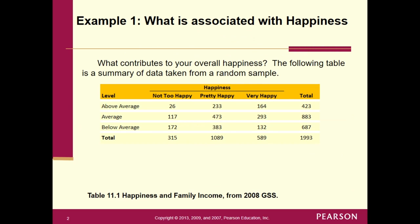So, what is associated with happiness? There is an actual sample that was taken, and what was looked at was family income — that is the explanatory variable. They had different levels: above average, average, and below average. And then happiness: not too happy, pretty happy, very happy. Notice we have two categorical variables — family income is not being measured with a number, it's above average, average, or below average, so it's categorical. And happiness: not too happy, pretty happy, very happy. These numbers were taken from a sample of roughly 2,000 households.